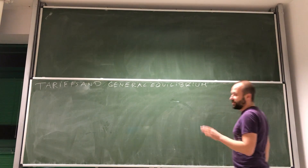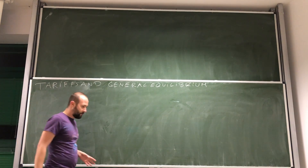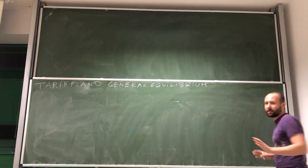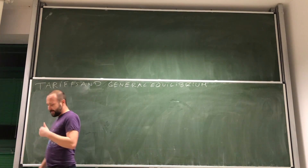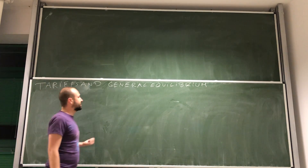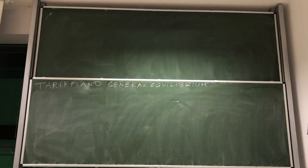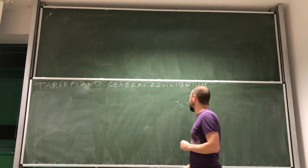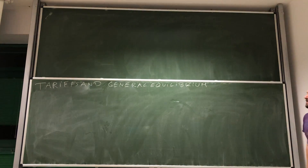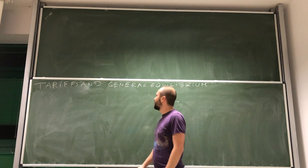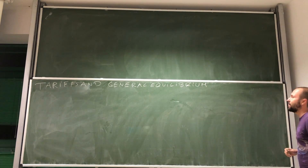Hi. In the previous video we were dealing with tariffs in a partial equilibrium model. Now we're going to go back for just a little to the general equilibrium model and we're going to see the effects of tariffs in the classical model of trade that we've introduced in the probably 15 or 17 videos that we went through. Okay, so let's remind ourselves a couple of things.